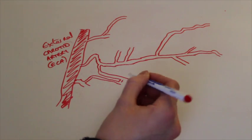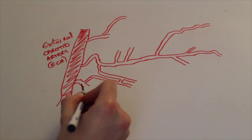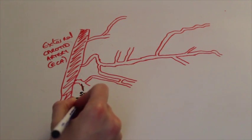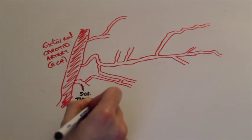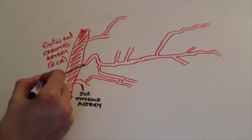So the external carotid artery which goes up the neck gives off many vessels. The first vessel it gives off is the superior thyroid artery. The second vessel it gives off is the lingual artery.